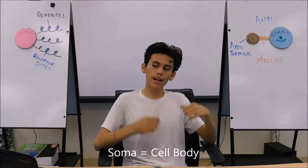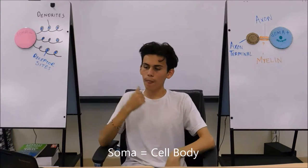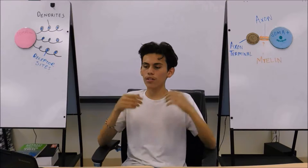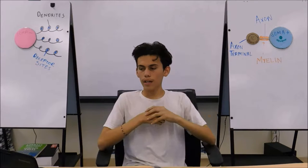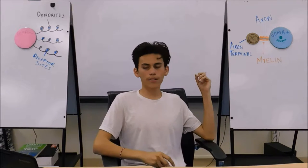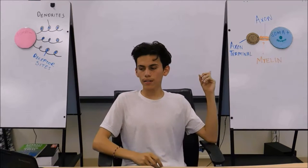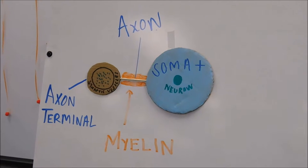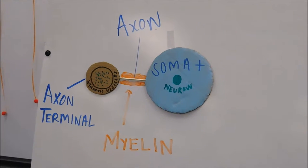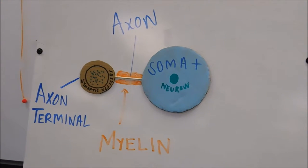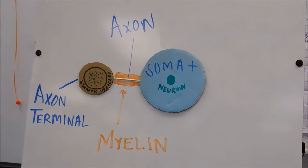Now let's welcome soma positive and soma negative. Remember the firing neurons? This is where they are housed, inside the soma. Connected to the soma positive is an axon — a long stick-like part that transports the electrical or chemical activity from the soma positive to the soma negative.